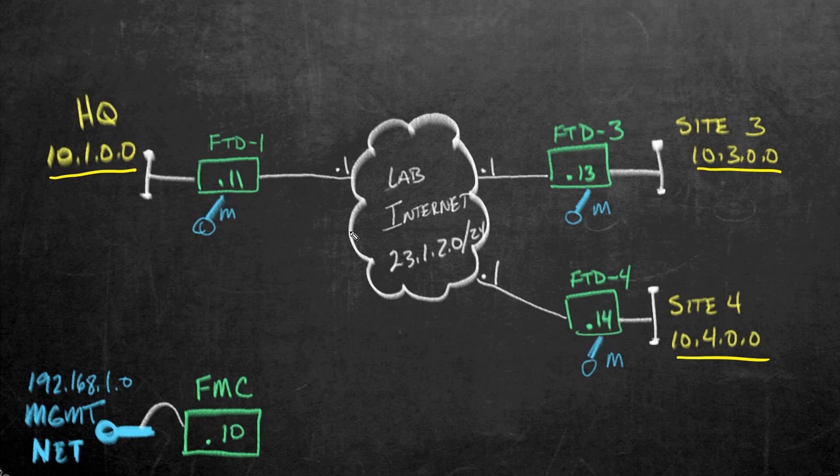And for the simulated lab internet, I'm going to use this address space 23.1.2.0 with the 24 bit mask. And I'll have the default gateway for the pseudo internet here as being dot one. So that way, whenever we see the 23.1.2 network, we'll just say, oh, yeah, that's the internet or the pseudo internet inside of our lab environment.